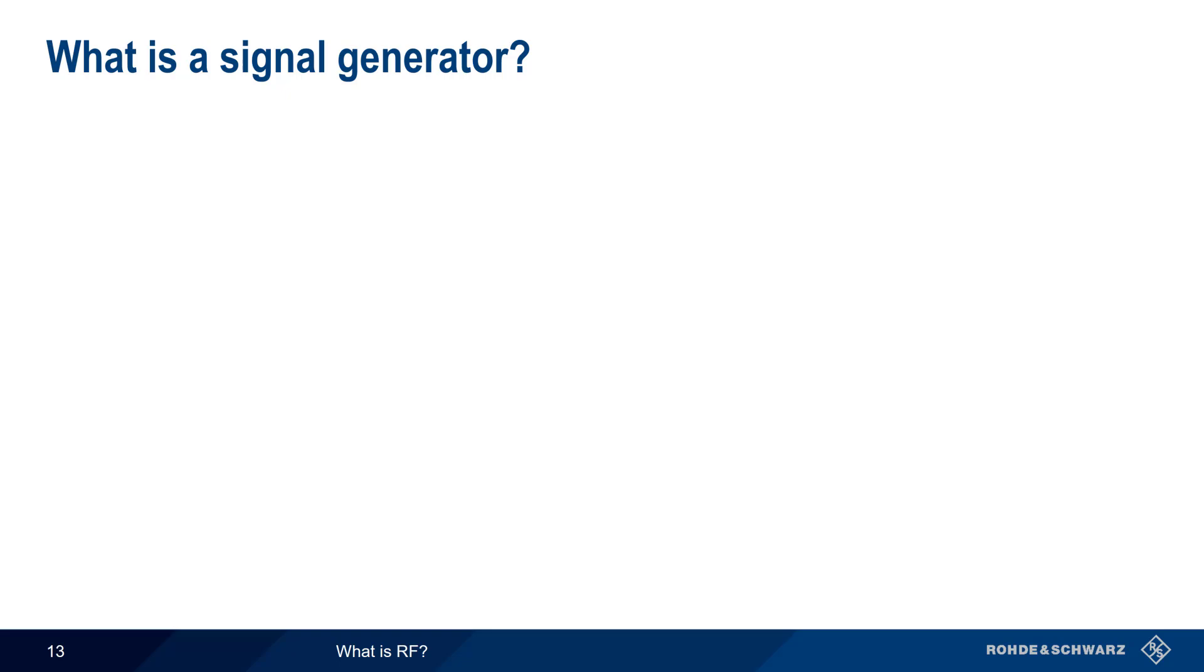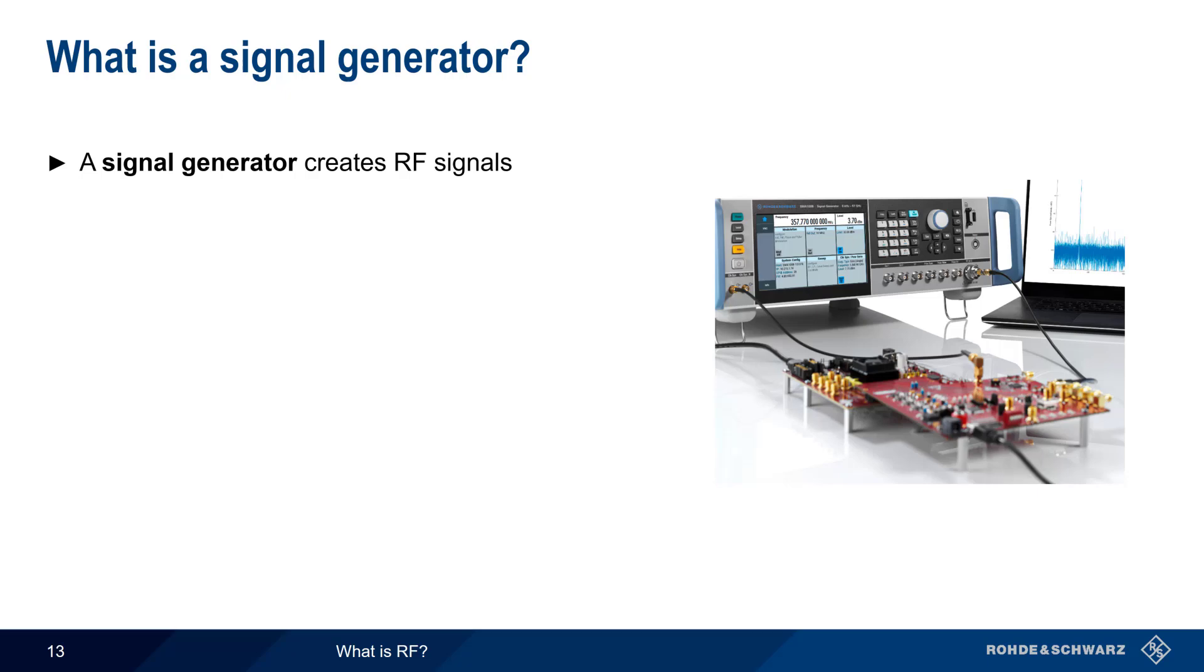In the real world, radio frequency signals come from various devices, such as your cell phone, a car remote, a GPS satellite, etc. An instrument called a signal generator can be used to create the different types of RF signals needed to design and test RF devices. These signals can be simple, unmodulated signals, or can be complex, modulated signals like those used in most wireless communication systems. A signal generator allows the user to control all of the parameters of the signals that it generates, including power, frequency, and modulation.